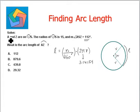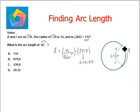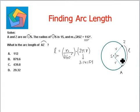In the given question, A and Z are on the circle with center S. A and Z are two points on the circle. The measure of angle ASZ equals 112 degrees, so N equals 112 degrees. The radius equals 15, so R equals 15.